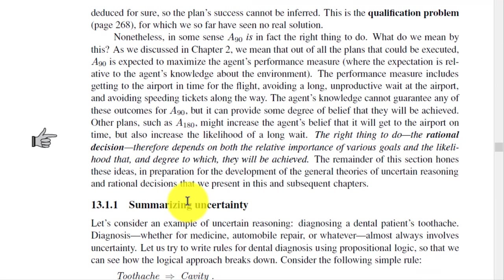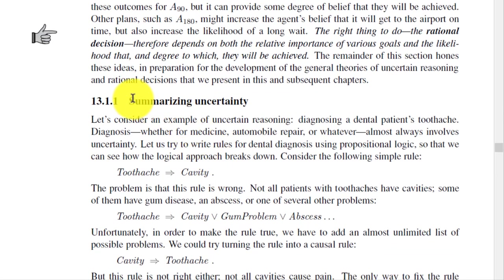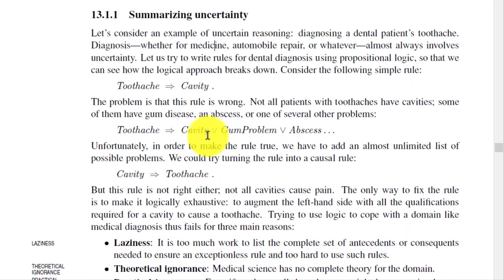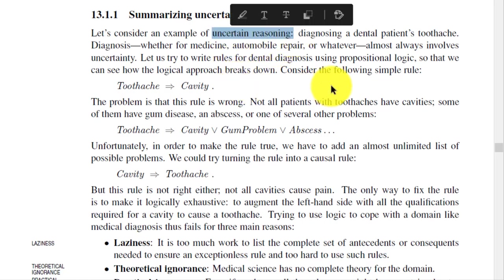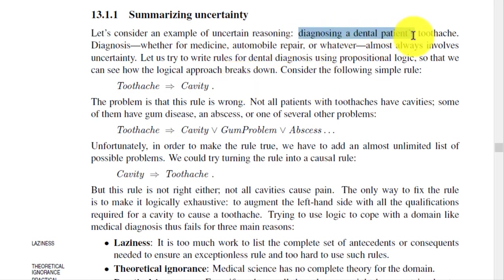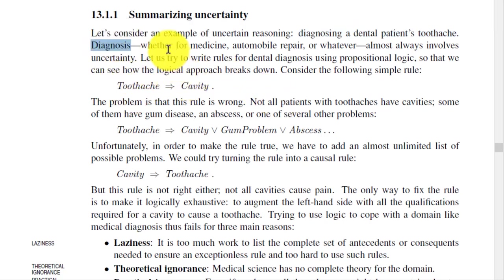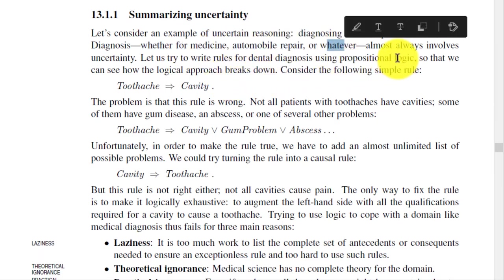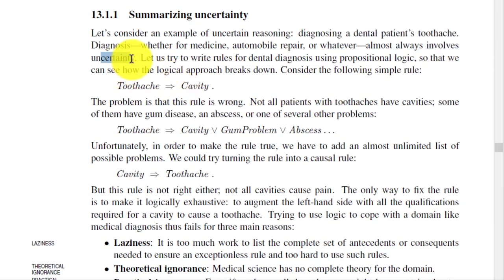The next point is summarizing uncertainty — how we make the separation of uncertainty. We consider one example of uncertainty reasoning: whenever we are diagnosing a dental patient, the diagnosis — whether for medicine, automobile repair, or anything else — almost always involves uncertainty. We cannot be certain what kind of diagnosis will result.